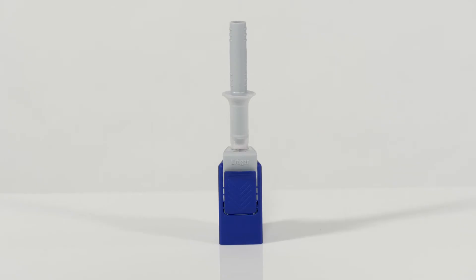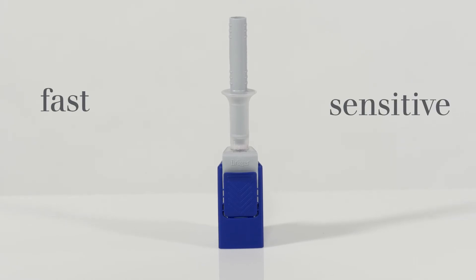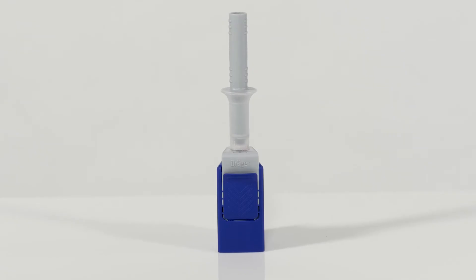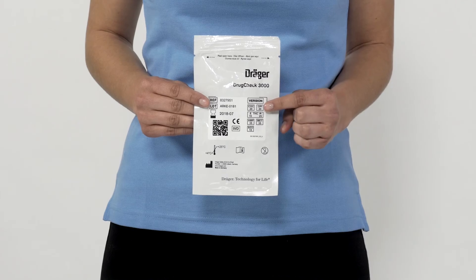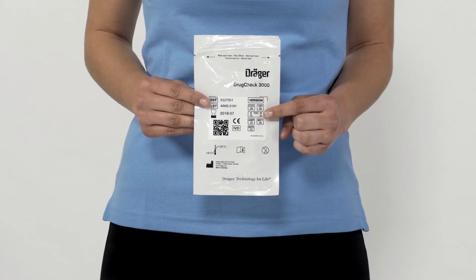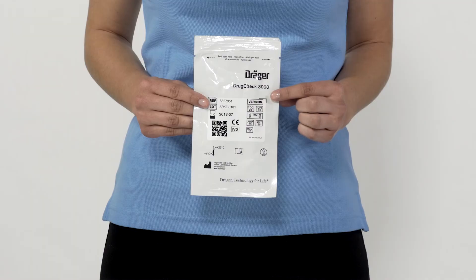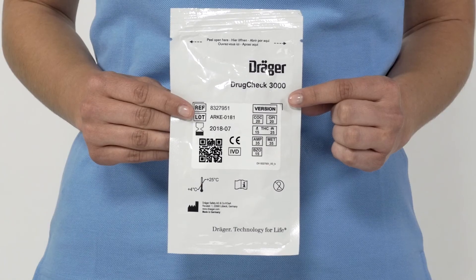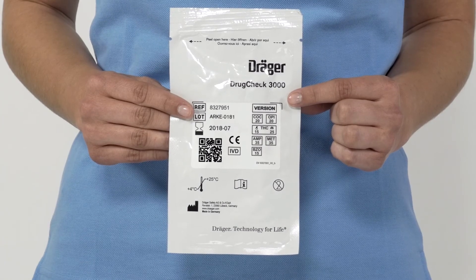The Dräger Drug Check 3000 enables you to choose between a fast or sensitive measurement to prove the presence of THC. The respective waiting or pre-incubation time must be strictly adhered to. Full information on wait times for THC testing, as well as limit values in nanograms per milliliter for all substances, can be found on the Dräger Drug Check 3000 packaging.